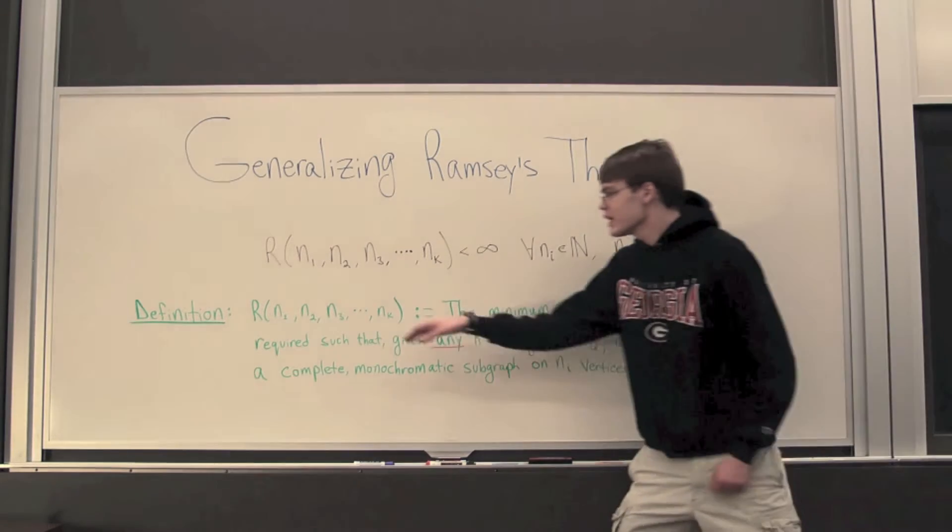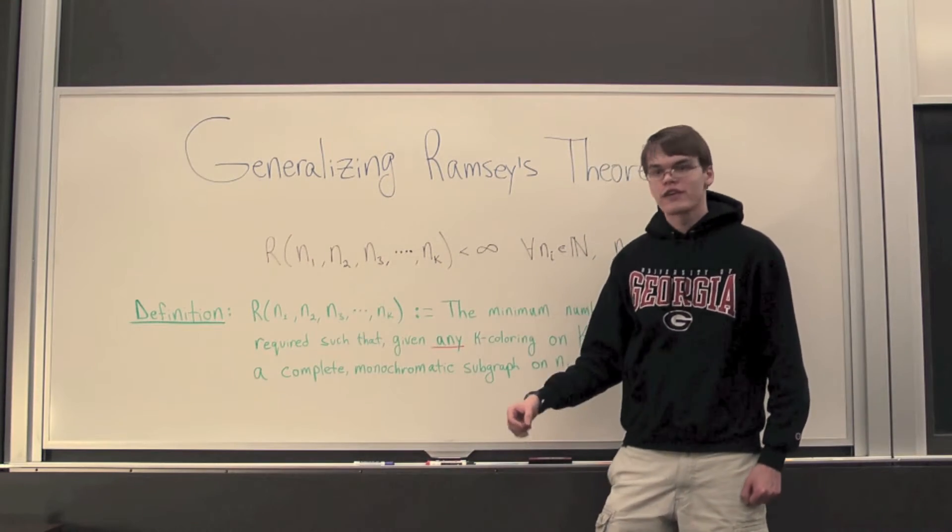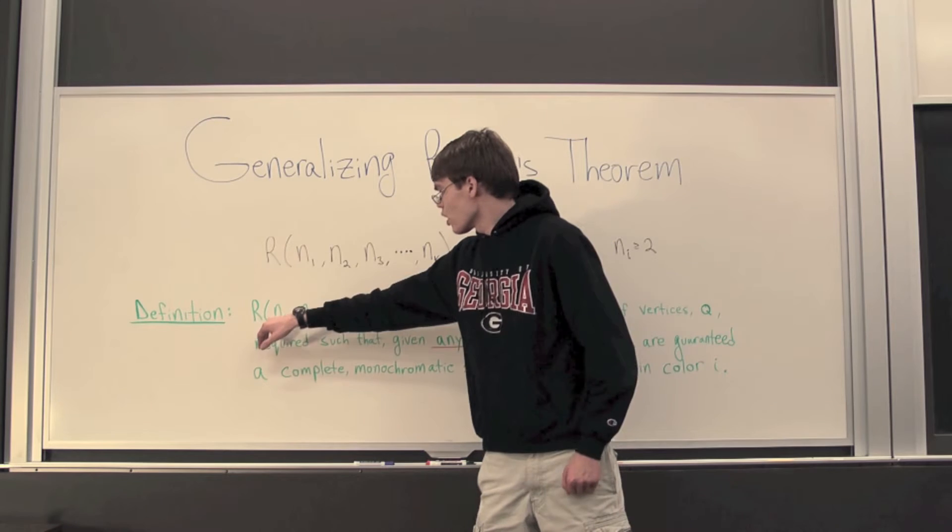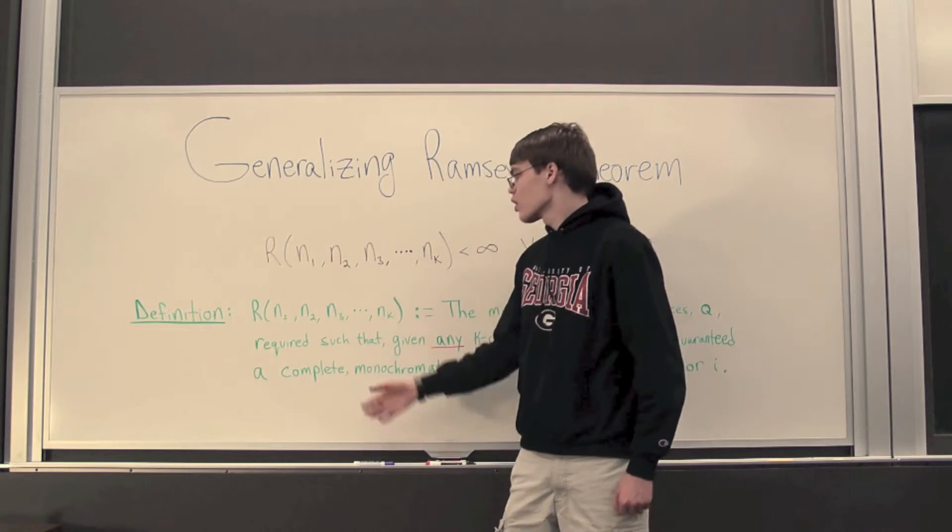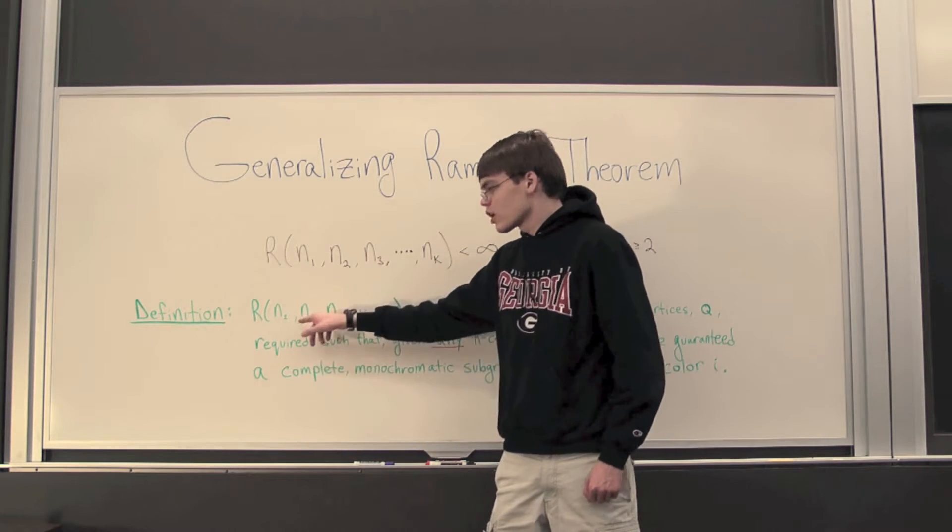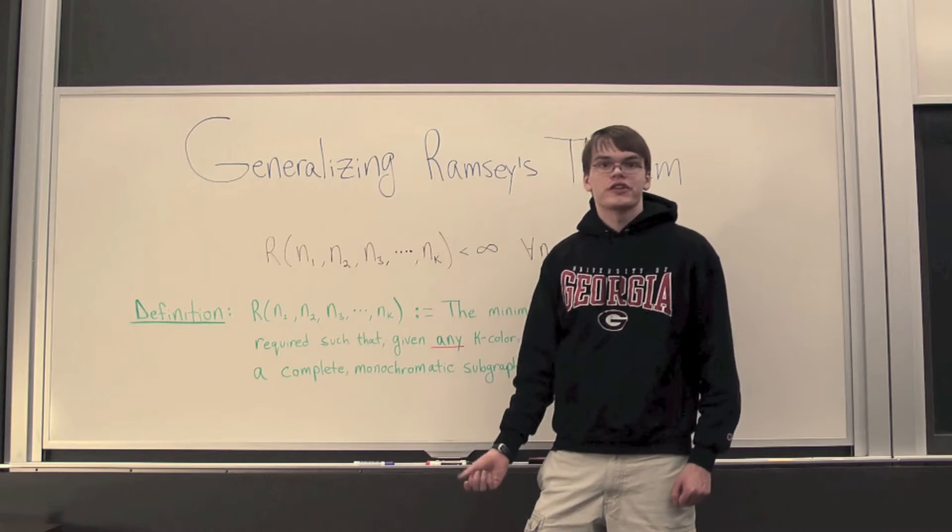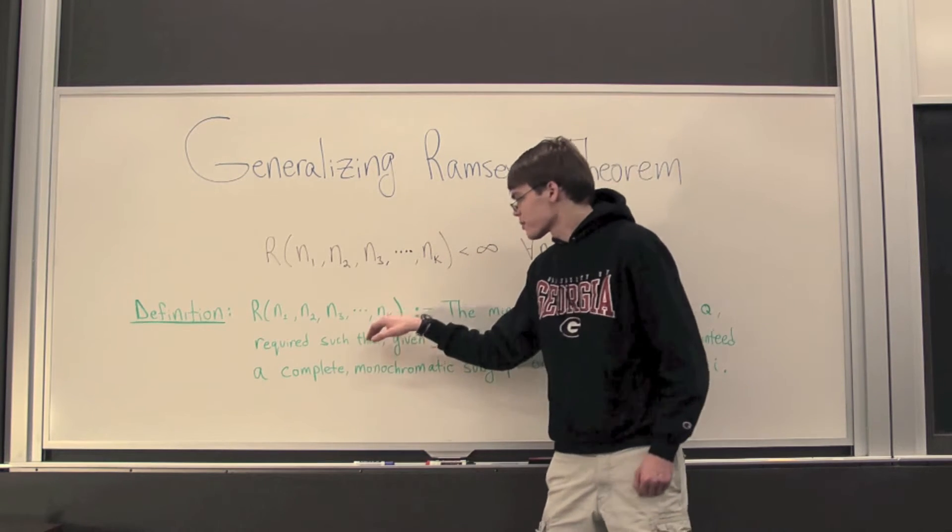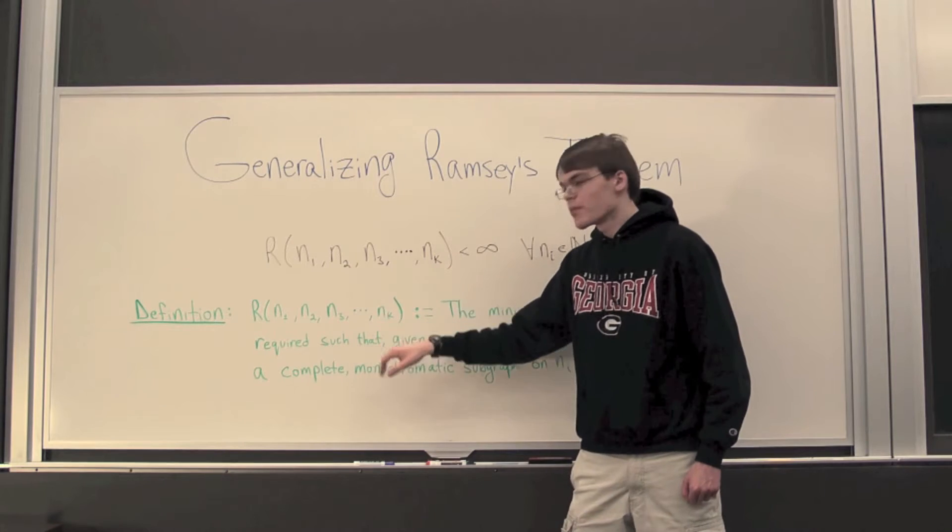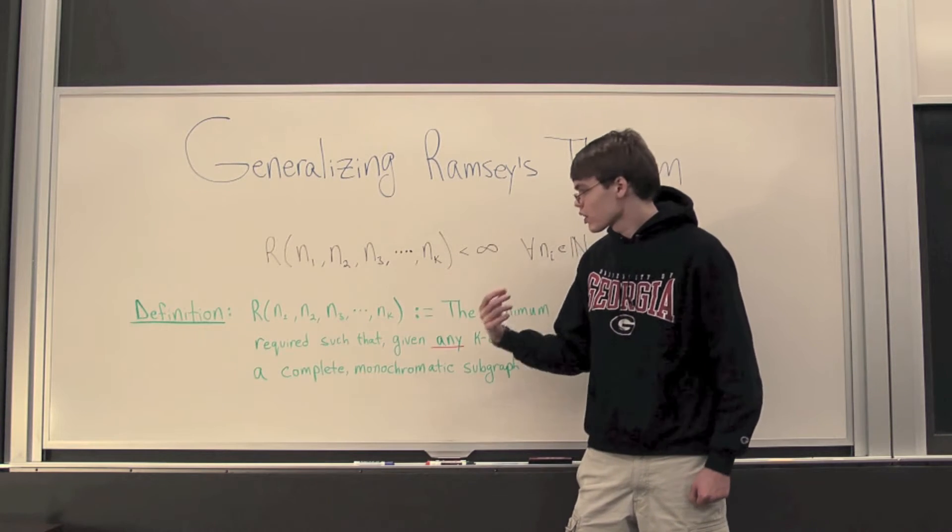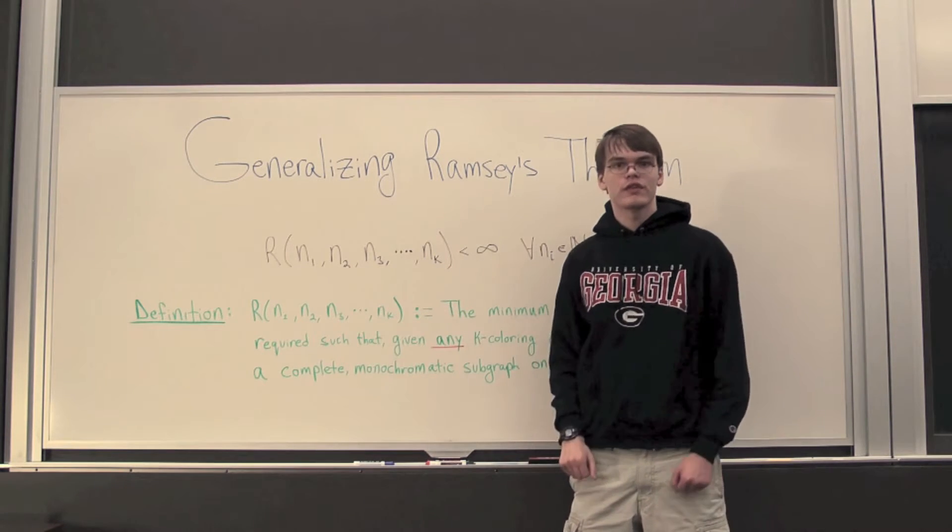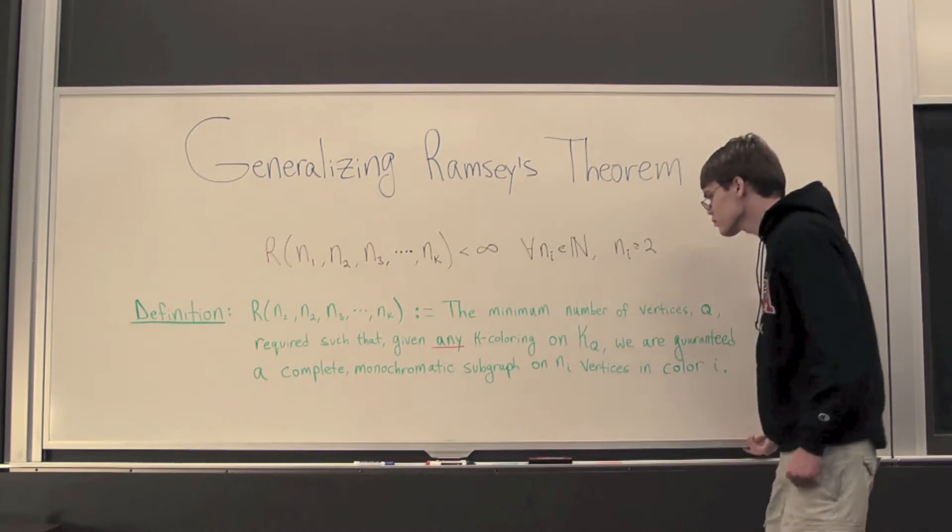then we're guaranteed a monochromatic subgraph in color 1 on n₁ of the vertices, or a monochromatic subgraph in color 2 on n₂ of the vertices, and so forth up until a monochromatic subgraph color k on nₖ of the vertices.